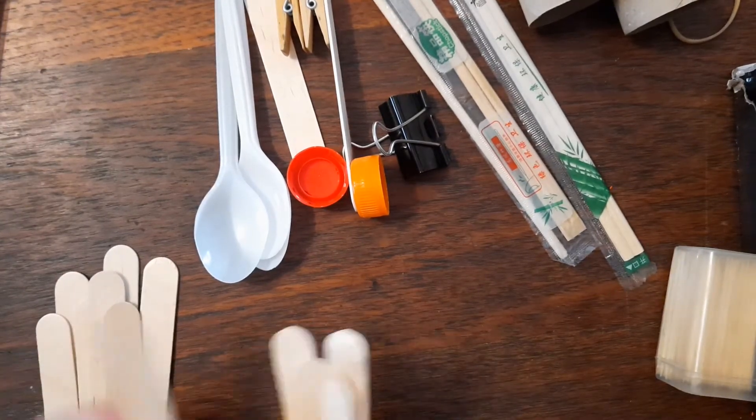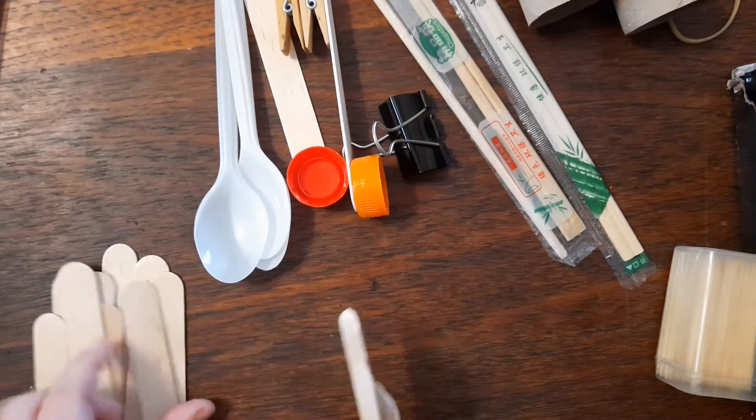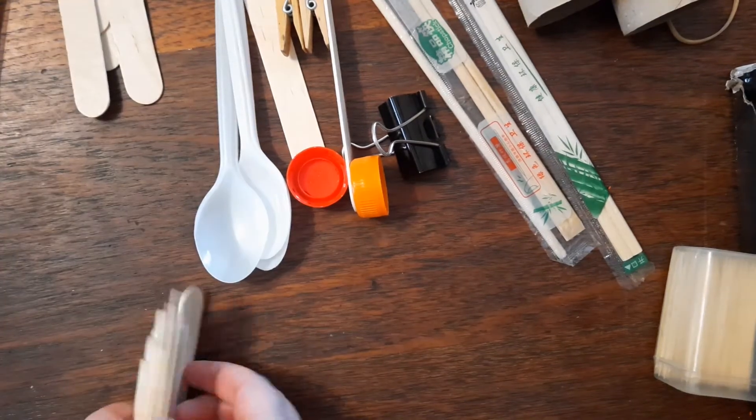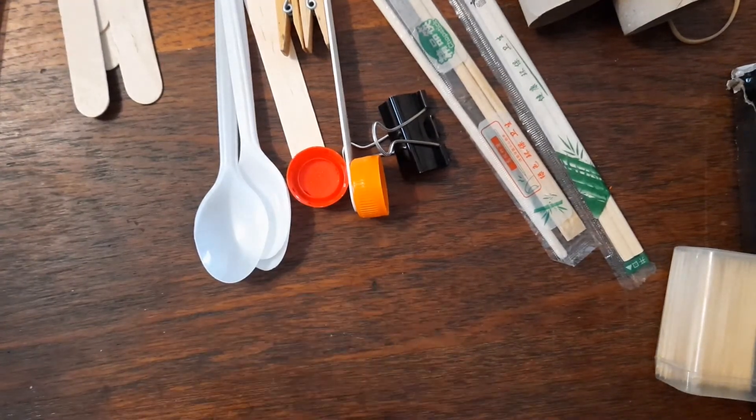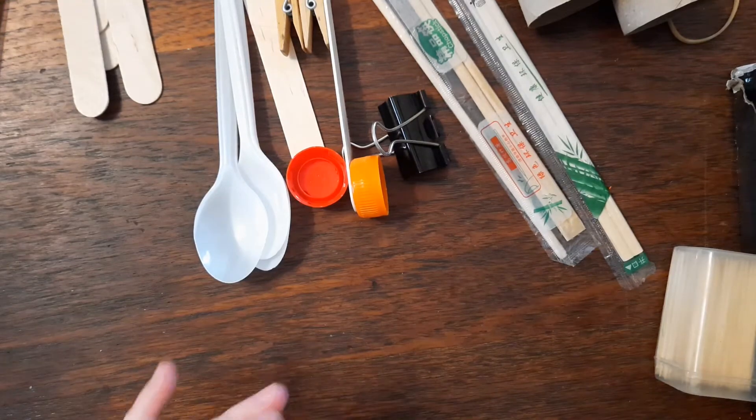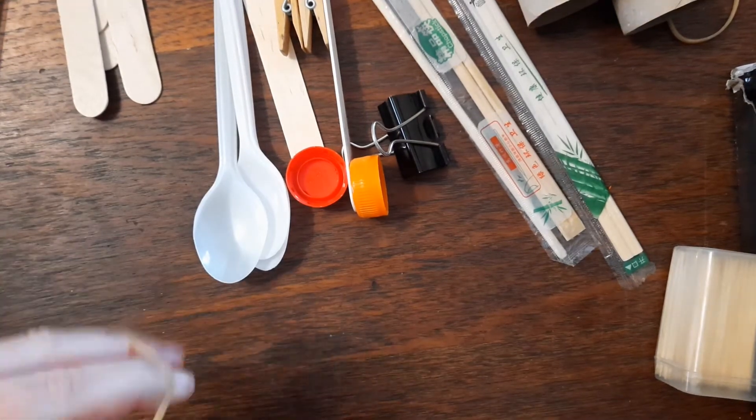Count out about 10 ice cream sticks. Once you've stacked them all together, tie rubber bands around each end.